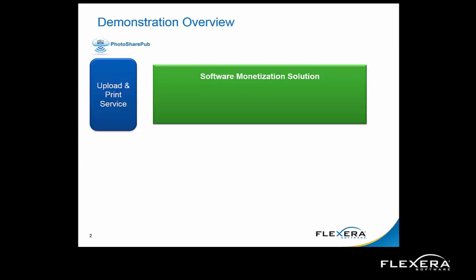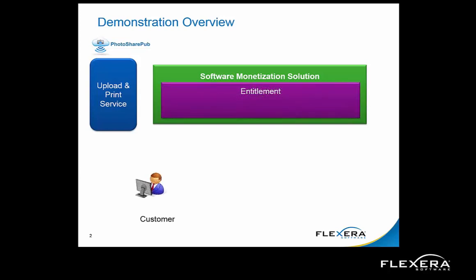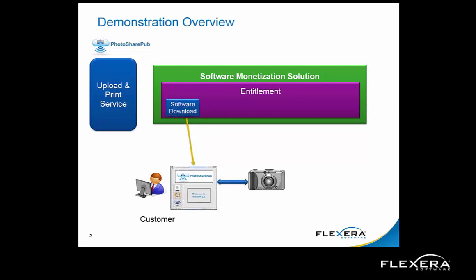Pictures can easily be uploaded directly from the camera or through a client-side application. The process starts with the purchase of the camera by the customer. PhotosharePub then creates an entitlement in the back office for the purchased features. The customer is notified of their purchase and is given access to a PhotosharePub-branded portal where they can view their entitlements, manage their camera licenses, and download software. Once the customer has downloaded and installed their software, they will then turn on or activate their purchased features on the camera — either directly from the camera or through the client application.